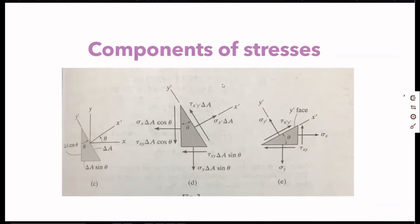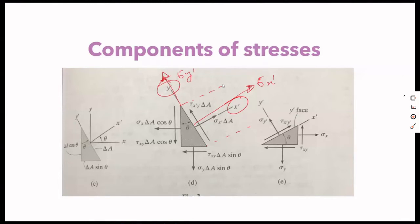We have taken x-dash and y-dash, where the normal stress sigma x-dash is found perpendicular to this plane, and sigma y-dash perpendicular to the other plane. When we rotate with theta, there will be infinite number of planes. Among these infinite planes, there will be an angle at which we get sigma x maximum.